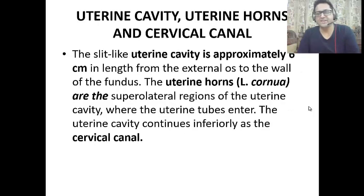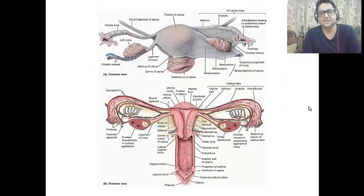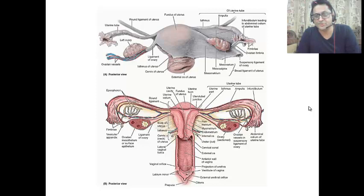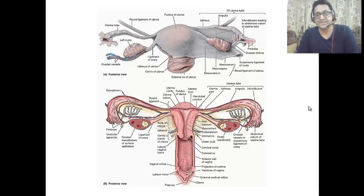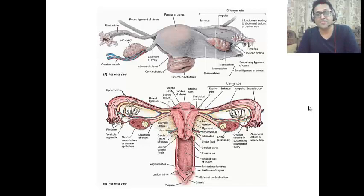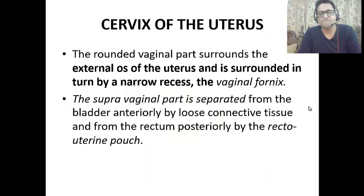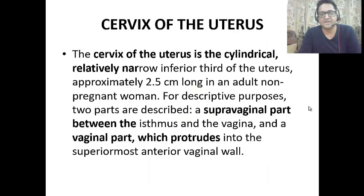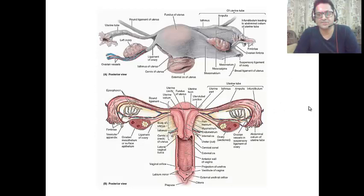The uterine cavity, uterine horns, and cervical canal can be seen in the diagram. The opening of the uterine tube into the uterine cavity is called the uterine horn or cornua. The central hollow portion is the uterine cavity, and the lower portion is the cervical canal.